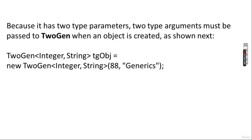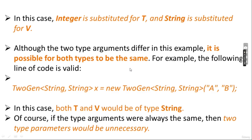It specifies two type parameters T and V separated by comma. Because it has two type parameters, two type arguments must be passed to TwoGeneric when an object is created, like Integer and String. So the Integer value will be 88 and the String value will be generic. Integer is substituted for T and String is substituted for V. Although the two type arguments differ in this example, it is possible for both types to be the same, like String, String.